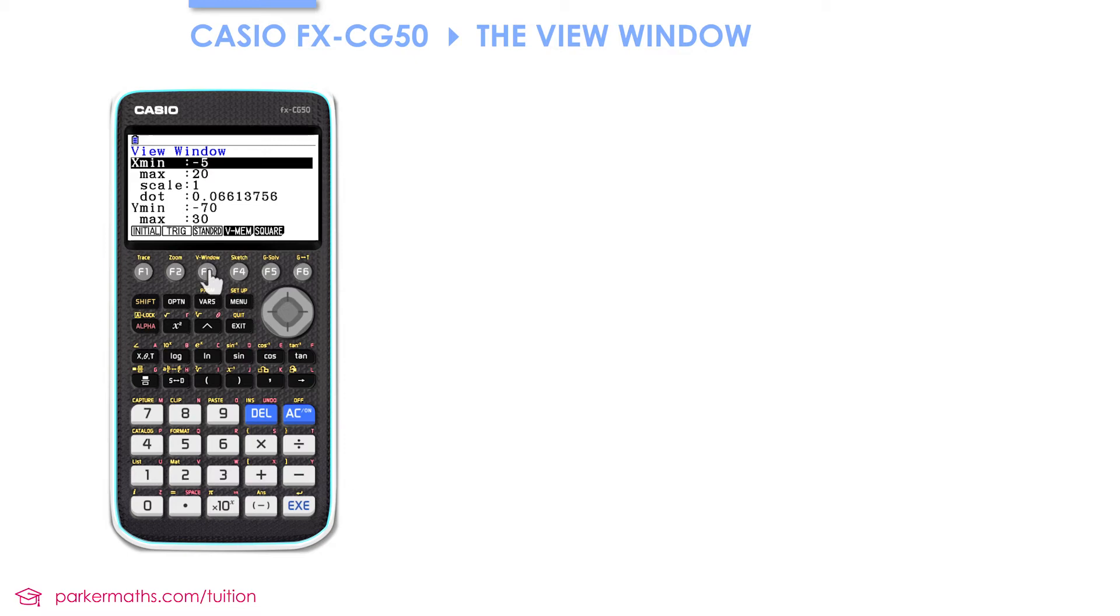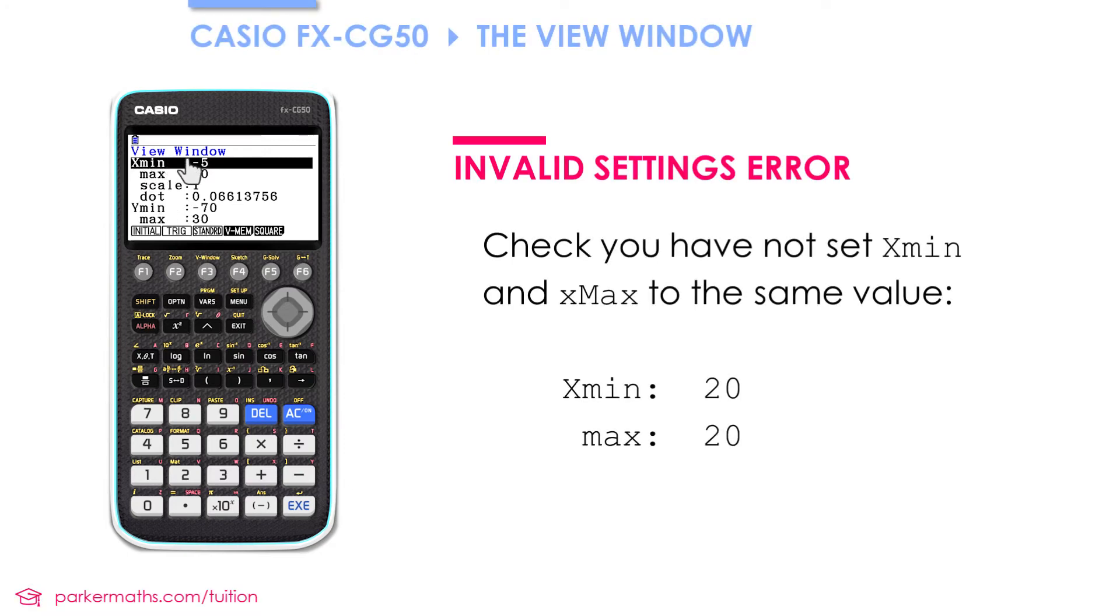That can be very useful to fix an error that sometimes occurs. Sometimes people accidentally set the x or y minimum and maximum values to the same value. So for example, if I set the xmin and xmax to 20, clearly my calculator is going to have difficulty drawing that. And if I try, I get an error which says invalid setting. If you get this error you won't be able to view the graph, and so the only way to get to view window is by pressing shift F3.